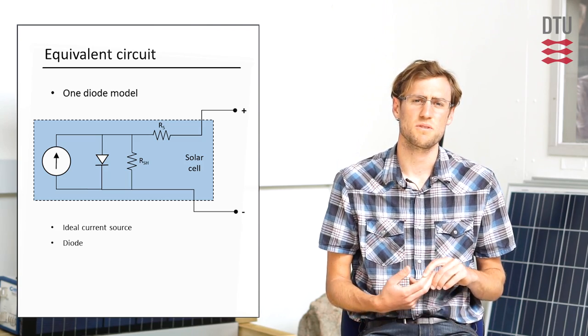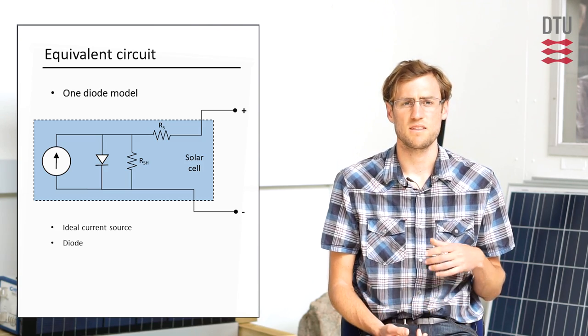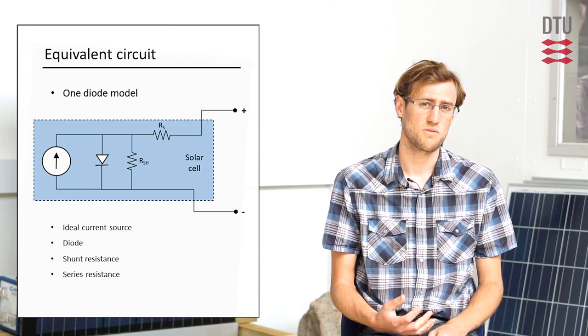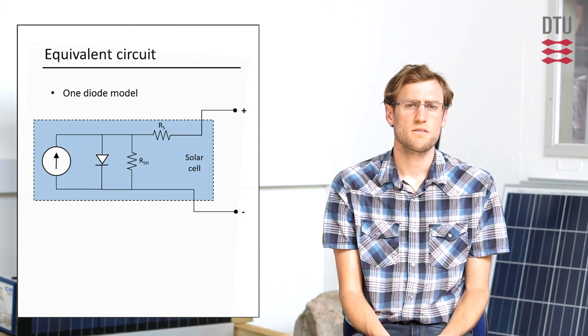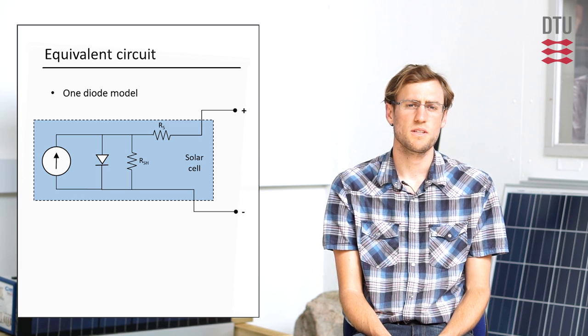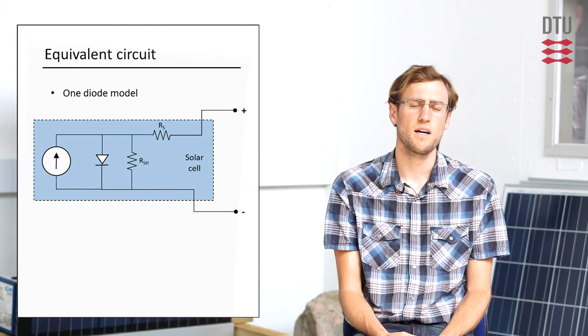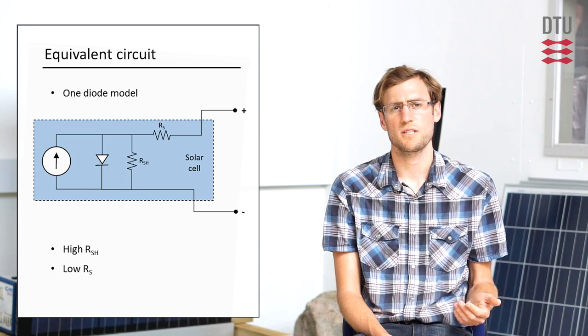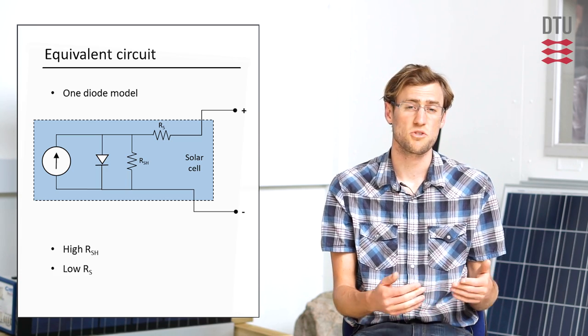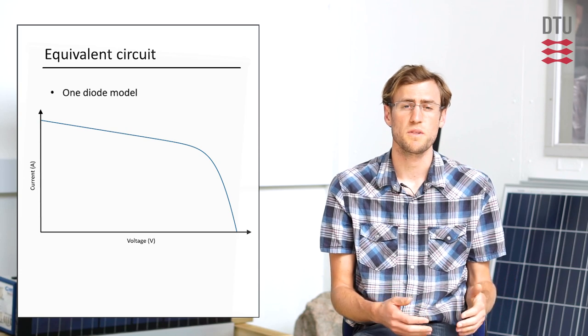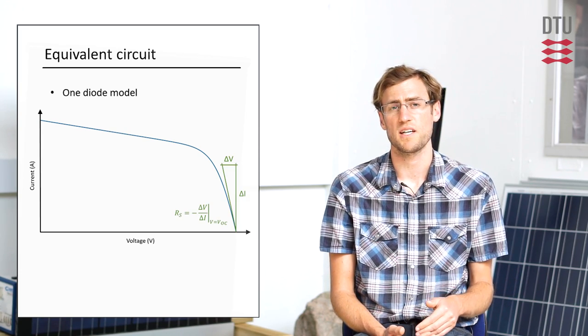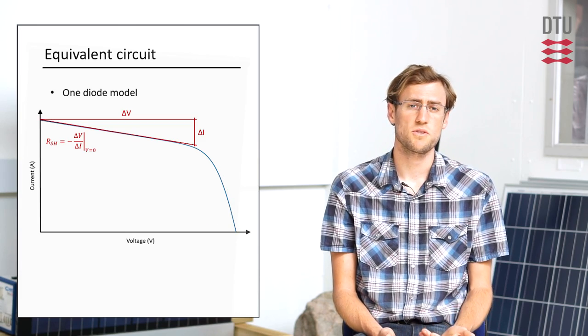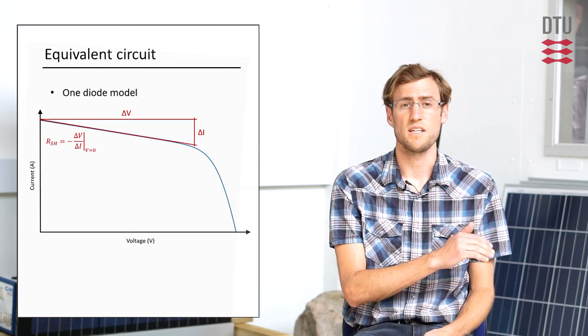And then we have two parasitic resistances, namely the parallel R shunt resistance and R series resistance. So if you look at an ideal PV device, we know that it should have a high R shunt value and a low R series value. Both the R series and R shunt values can be extracted from the IV curve. So the R series can be extracted from the slope of the IV curve near VOC. The R shunt can be extracted from the IV curve near ISC.